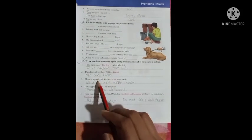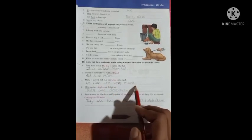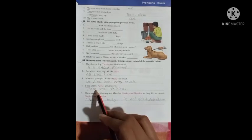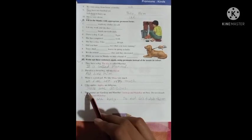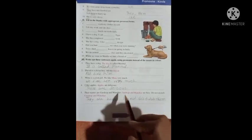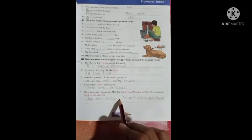Minu is a good girl. We like Minu very much. We like her very much. I like apples. Apples are delicious. Those are delicious. Their names are Gurdeep and Manohar. Gurdeep and Manohar are busy. They are busy. Do not disturb Gurdeep and Manohar. Do not disturb them.